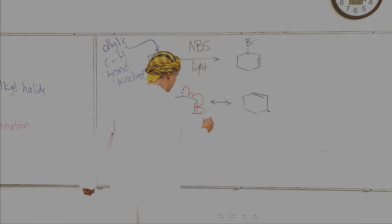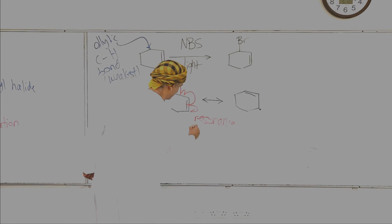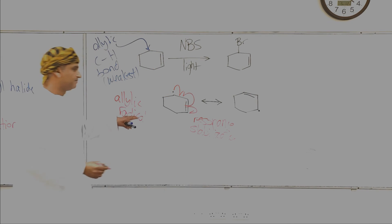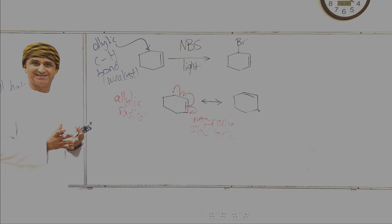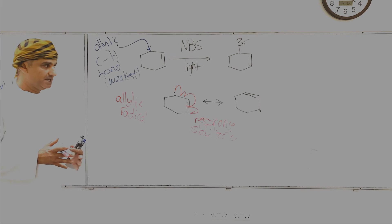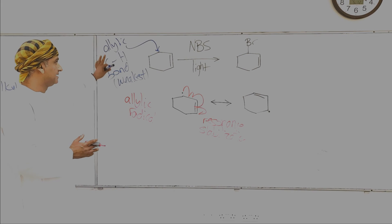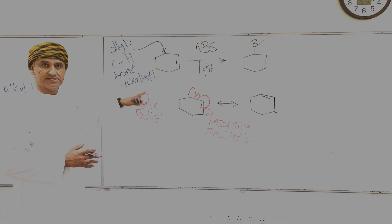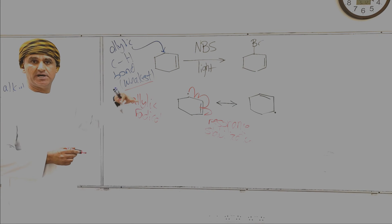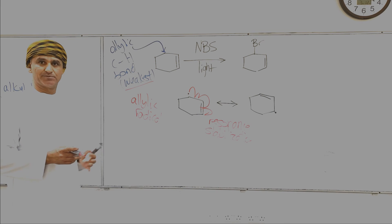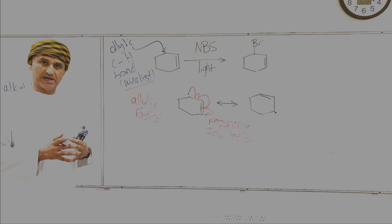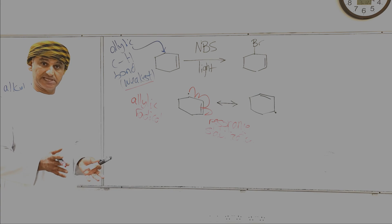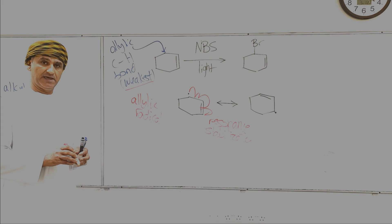This is resonance stabilization, and it is what makes the allylic radical stable. This is one reason why allylic bromination takes place at the allylic position. This can also be supported by the bond dissociation energy: the allylic C-H bond is the weakest C-H bond in the molecule, so it is broken. Under these conditions, it is broken homolytically to give radicals — specifically an allylic radical — which is then stabilized by resonance.